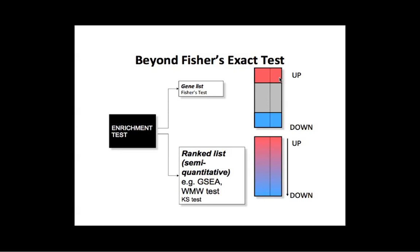There's a second set of enrichment tests that use a ranked list and don't throw away any genes. Instead, you use the full list of genes ranked from upregulated to downregulated. The most popular software implementing such a test is GSEA — Gene Set Enrichment Analysis. If you have a ranked gene list, you can try out GSEA. It's a pretty easy tool to use and there are lots of tutorials.